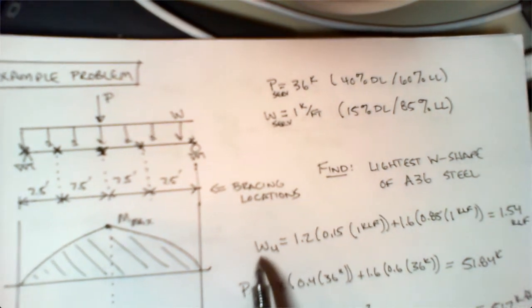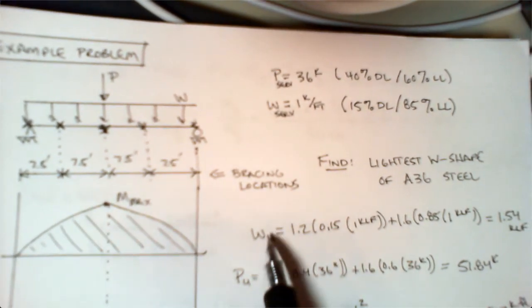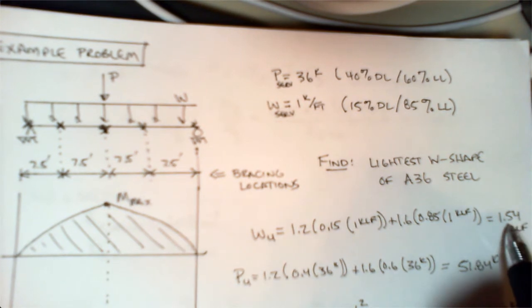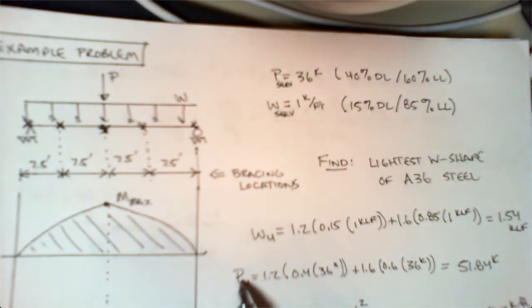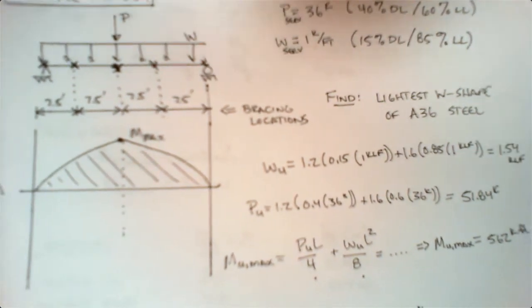First thing we do is factor the loads. You can see the factored load for WU is 1.54, using the 1.2 dead case and the 1.6 live. For PU, the factored load is 51.8 kips as well.